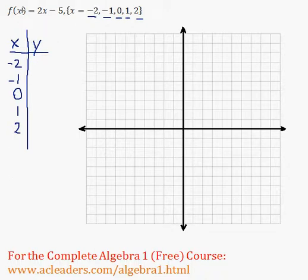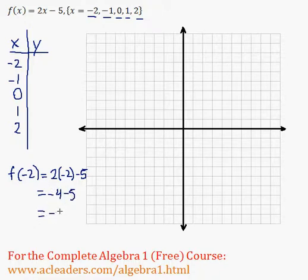So f of x is y, so f of negative 2, which is y when x is negative 2, will be equivalent to 2 times negative 2 minus 5. So 2 times negative 2 is negative 4, minus 5, negative 4 minus 5, negative 9, negative 9. That's it.